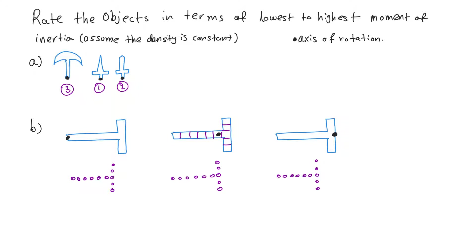An important point: the lowest moment of inertia usually occurs around the center of mass of the object. To find the center of mass, we look at the mass distribution horizontally or vertically and find where it balances. For this shape, there are six point masses on one side and five on the other; counting five to the left and five to the right locates the center of mass.